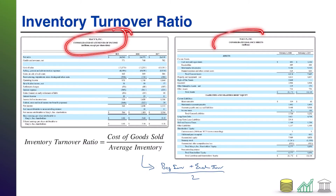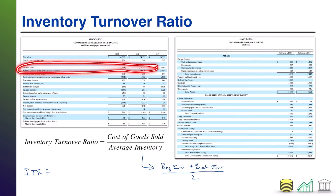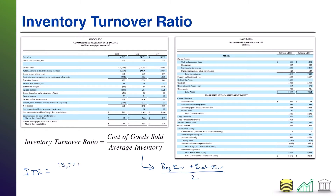Up here I've got Macy's — their income statement and their balance sheet. If I pull their numbers: ITR equals cost of goods sold. Right here, Macy's calls it cost of sales. I'm just going to do 2019 here. Looks like 15,171.